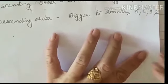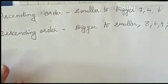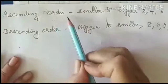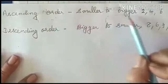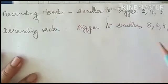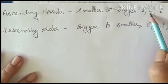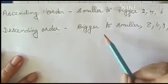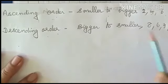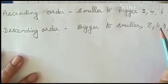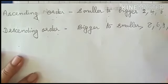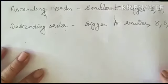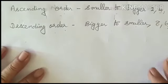Followed, children? This is the way. Ascending order means smaller to bigger: 2, 4, 6. And descending order means bigger to smaller: 8, 6, 4, and 2. Any number, whichever you want, you can take.